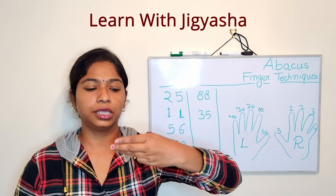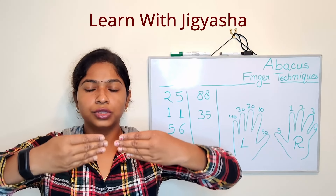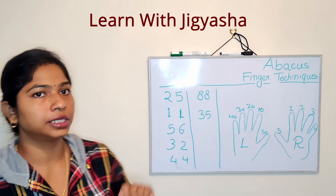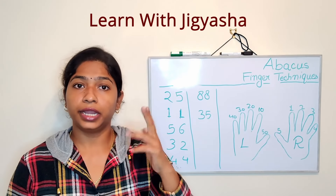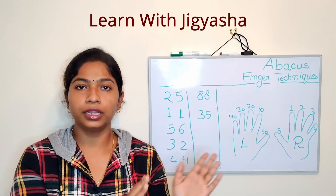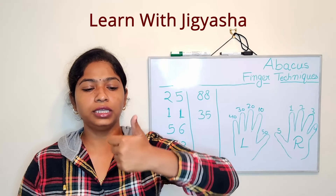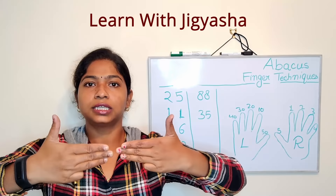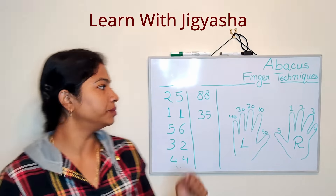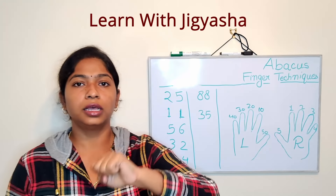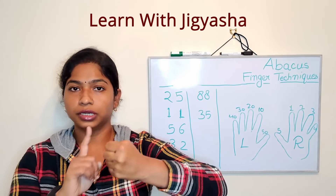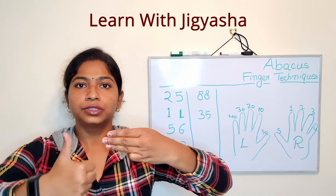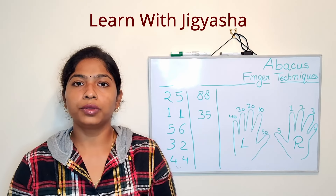Next: 44 — break it into 40 and 4. 40 goes on the left hand: 10, 20, 30, 40, and 4 goes on the right hand: 1, 2, 3, 4 — so this is 44. Next: 88 — break it into 80 and 8. 80 goes on the left hand and 8 goes on the right hand. I hope you understand up to here.